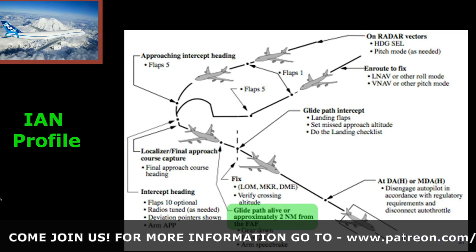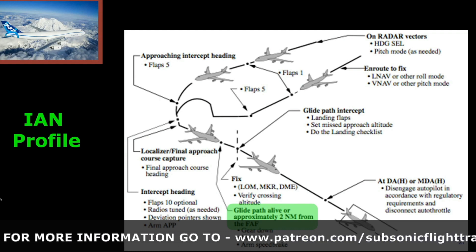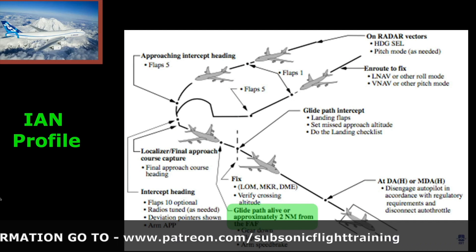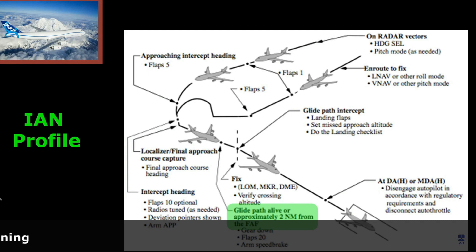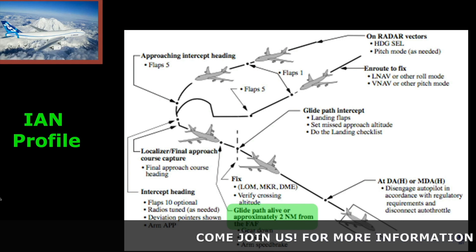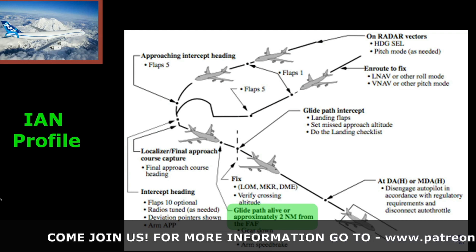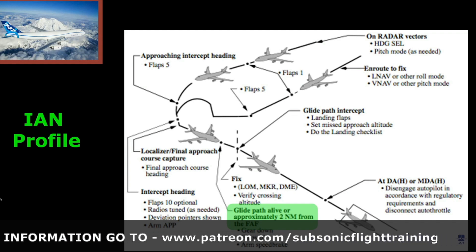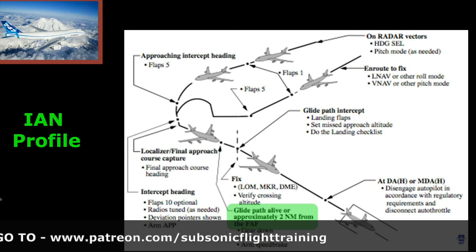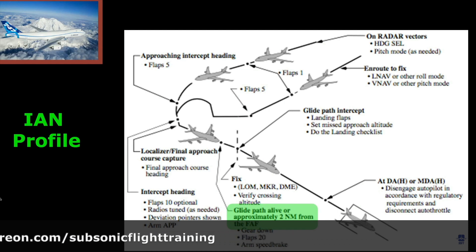Although an IAN approach is not an ILS approach, it has the same alerting as an ILS approach, which is the advantage. The other difference is it is not to an auto land like an ILS approach with land 3. Normally we disconnect at some point and manually land — unless doing CAT 2 or 3 approaches, which would be auto land. In the case of an IAN approach, flare and rollout are not going to arm. You have to disengage the autopilot, just like in any non-precision approach, in accordance with regulatory requirements, and then disconnect the auto throttle for landing.